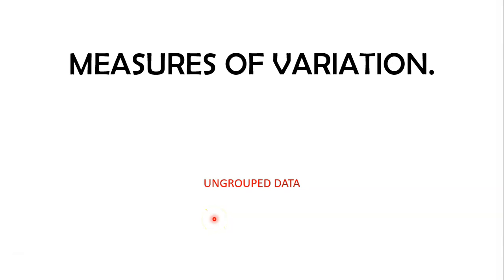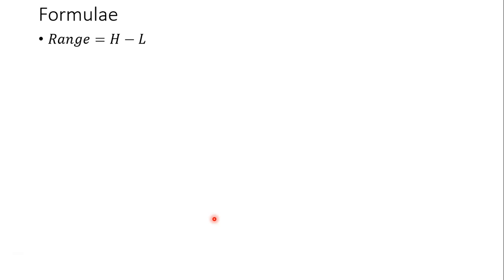Welcome guys. In today's tutorial we're going to look at measures of variation for ungrouped data. Let's take a look at the various formulas we'll be using. The first formula is the range, which equals H minus L, where H means the highest value in the data set and L means the lowest value. We're also going to look at variance and standard deviation — both population and sample versions.